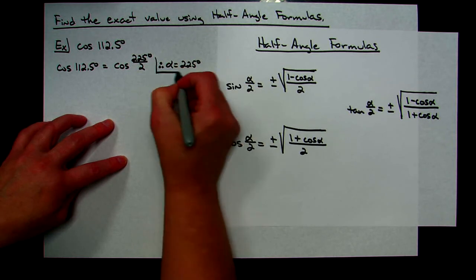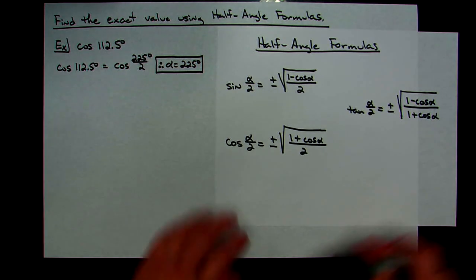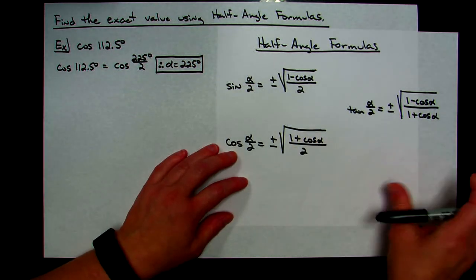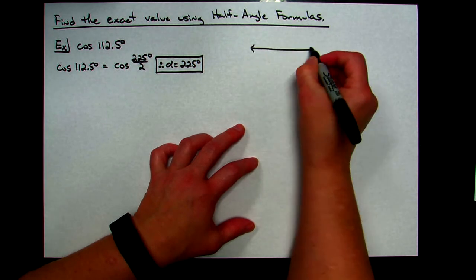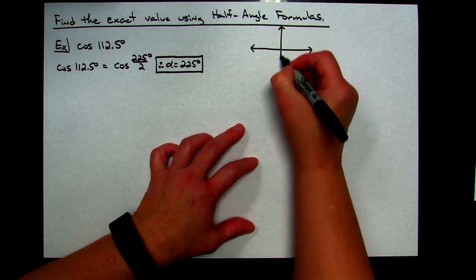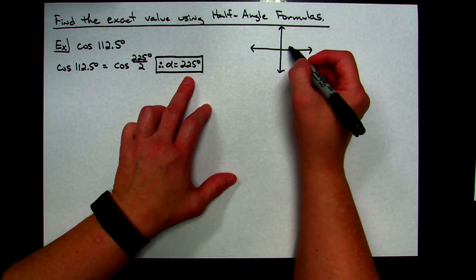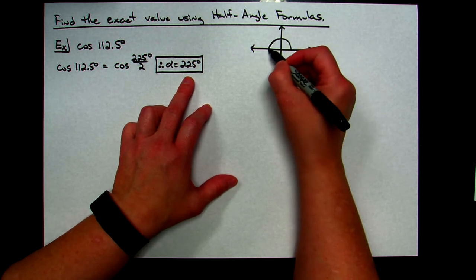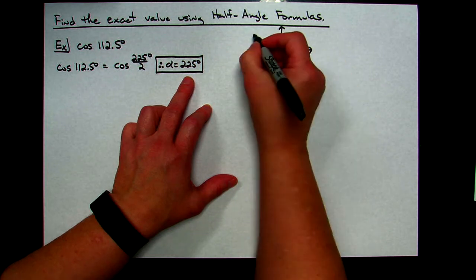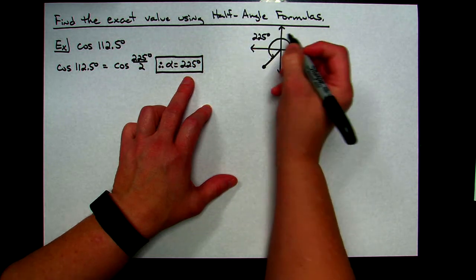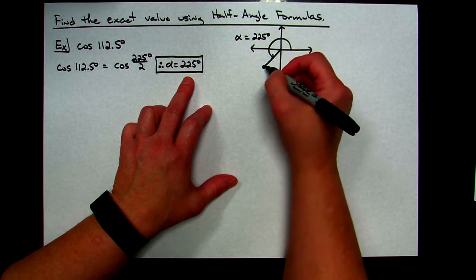Knowing alpha = 225° is crucial for plugging values into the formula. I also need to decide whether to use the positive or negative sign. Do a quick sketch and determine which quadrant 225° is in — you don't need to be precise, just know the quadrant. Working around, 225° falls in the third quadrant. Make sure you're using your alpha angle to determine the quadrant.